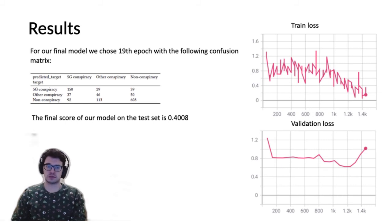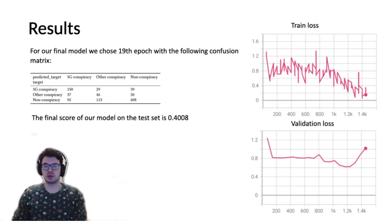The results are as follows. You can see on the right that our validation loss was stagnating after the first epoch until approximately the 10th, but after that it started improving. We looked at the best result per epoch based on the confusion matrix on validation, with our goal being to improve accuracy for 5G conspiracy prediction, which had a higher weight in our internal evaluation. We chose the 19th epoch, with the confusion matrix shown in the slide.